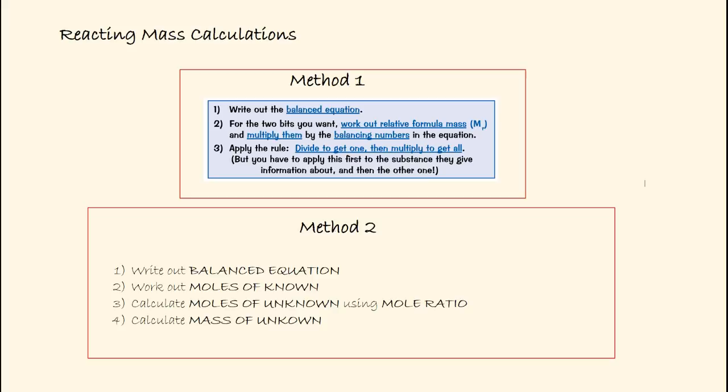Method one is to write out the balanced equation, then work out the relative formula mass of each side and multiply them by the balancing numbers in the equation — i.e. the stoichiometry — and then apply the rule: divide to get one, then multiply to get all. You apply this first to the substance they give information about, and then the other one.